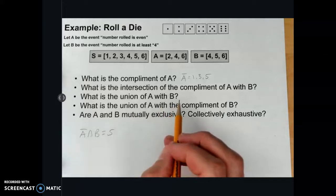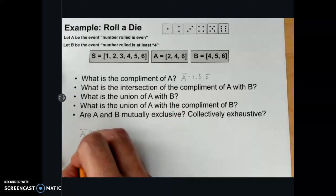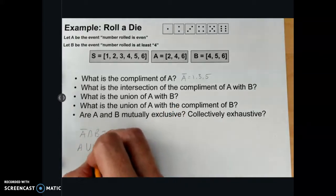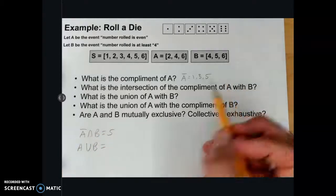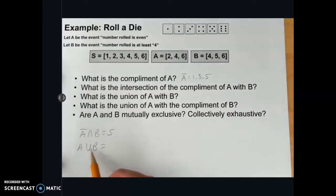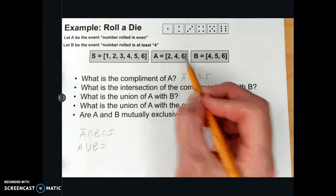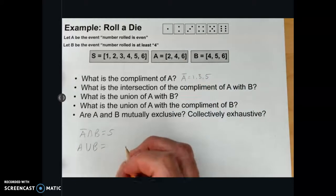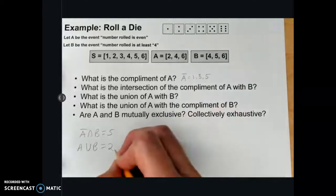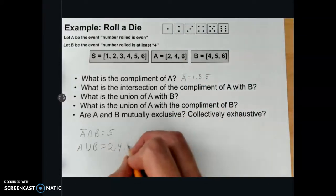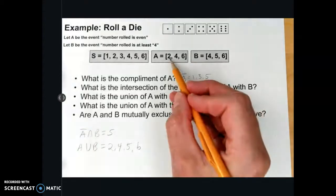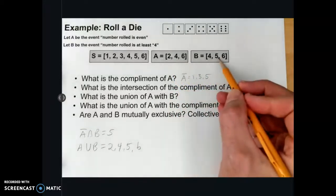What is the union of A with B? Denote that as A union B. For that, we want A or B. A is 2, 4, 6, and B is 4, 5, and 6. So 2, 4, 5, and 6. Everything in A and everything in B.